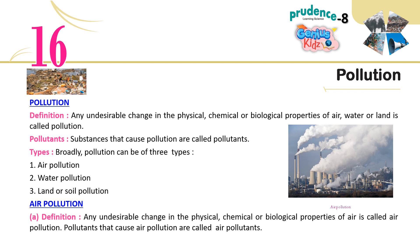Broadly, pollution can be of three types: 1. Air pollution, 2. Water pollution, 3. Land or soil pollution. Air pollution definition: Any undesirable change in the physical, chemical or biological properties of air is called air pollution. Pollutants that cause air pollution are called air pollutants.